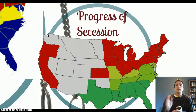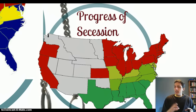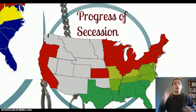Secession from the Union means leaving the United States. The states at the bottom of the screen — Texas, Louisiana, Mississippi, Alabama, Georgia, South Carolina, and Florida — are the states that secede from the Union first. They leave the United States and form their own country called the Confederate States of America. What do these states have in common? They're lower South states; they all rely heavily on slavery. They secede pretty much right after knowing the results of the election. The upper South states do not secede from the Union right away — they don't secede until the firing upon Fort Sumter.